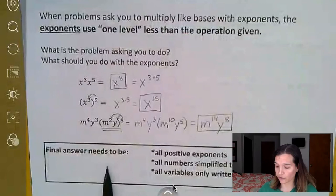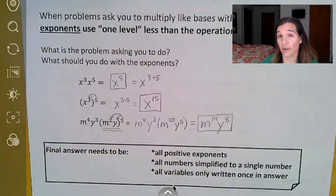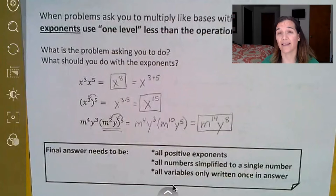Other things that you need to remember with this, your final answer is going to always be all positive exponents. You'll see that coming up. All numbers need to be simplified to a single number. So if it's two to the third power, you don't leave it as two to the third power, you multiply two times two times two, which is eight, and write that as its simplified answer.